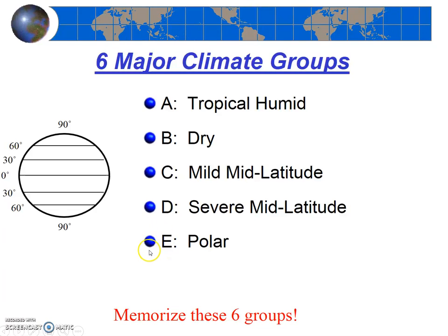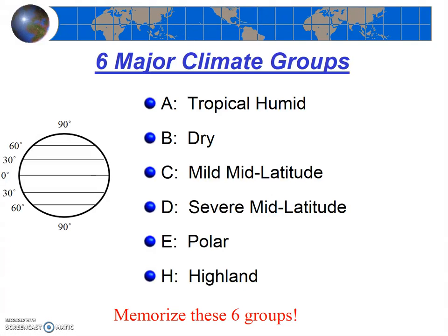Next, our polar E climates. As the name suggests, they tend to be near the poles, near 90 degrees north and south — and as you might imagine, these are cold places. Lastly, our highland climates are controlled by elevation and can be found at any latitude. For instance, a high mountain region near the equator might be expected to be an A climate, but because of the high mountains it's much colder and you end up having what we call a highland climate. We're not going to use highland climate too much in our discussions, but just know that they exist.